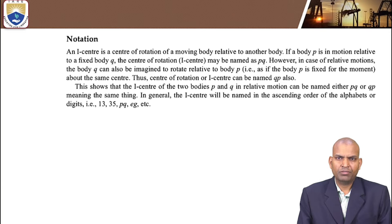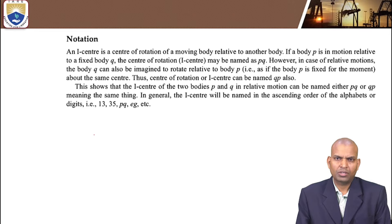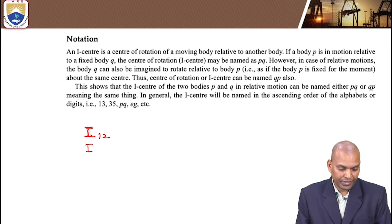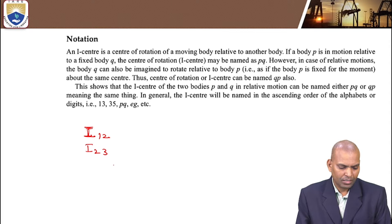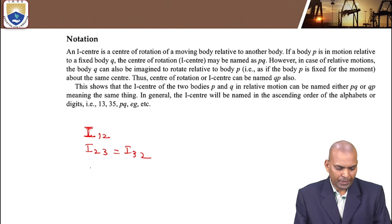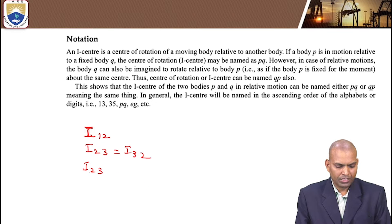This iCenter will be denoted with different letters. Some textbooks follow the iCenter notation representing it as i12, meaning the iCenter between link 1 and 2. If the iCenter is between links 2 and 3, it is denoted i23. Note that i23 equals i32, but we follow ascending order, so we write i23.